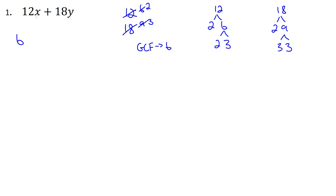Looking at the letters: the first term has an x but the second doesn't, and the second term has a y but the first doesn't. There are no common letters between the two terms, so we can't factor out any variable. All we can do is take out the 6. What's left of 12 after dividing by 6 is 2, and the x stays. What's left of 18 after dividing by 6 is 3, and the y stays. So the factored form is 6(2x + 3y) — changed from a sum to a product.